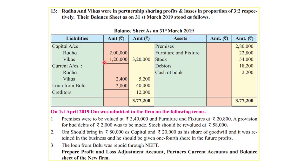Looking at the given balance sheet, I can see current account balances for Radha and Vikas. This means the given sum is under the fixed capital method. In this method, all partner-related adjustments will go through the current account. As mentioned in the last line of the information, we need to prepare the profit and loss adjustment account, partners' current account, and balance sheet of the new firm. So instead of the capital account, we will draw the partners' current account here, because it's a fixed capital method — the capital balance will not change.